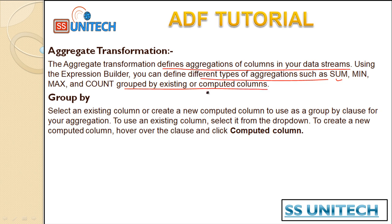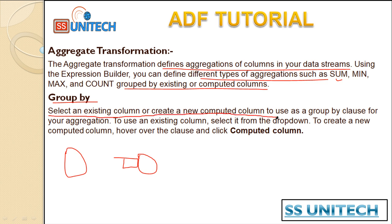Computed columns we have already seen inside the derived column transformation. Now, what is group by? For example, if you are having three columns and we want to do grouping based on two columns, the third column will be having the aggregated values. Select an existing column or create a new computed column to use the group by clause for your aggregation. To use an existing column, select it from the drop down — we will see that in the practical.